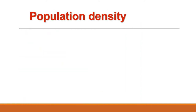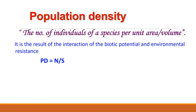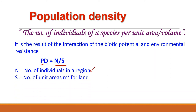Population density of a species is the number of individuals of a species per unit area or volume. For example, the number of animals per square kilometer or the number of trees per acre of a forest. Population density reflects the success of a species in a given area and is the end result of the interaction of biotic potential and environmental resistance. Population density, denoted by PD, is calculated as N divided by S, where N is the number of individuals in a region and S is the number of unit areas — measured in meters squared for land and meters cubed for aquatic animals.